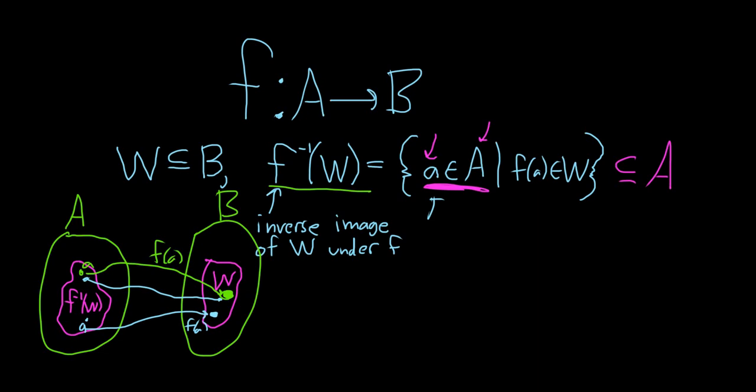Let's think about it. Let's write this down. Let's take an element in here. So take, think about this. If you take an element, little a, in the inverse image of W, what does this mean? So this means, well, this is the condition. This is what it means to be in a set. This means f of a is in W.